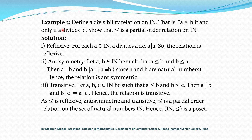Next example: define a divisibility relation on N. That is, A precedes B if and only if A divides B. Show that this relation is a partial order relation on N. Again, we check the three properties. First is reflexive.